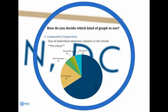Let's look at a few examples from the book. The first is called the component comparison. This is defined as comparing the size of individual elements relative to the whole. In the book, it's suggested that for this type of comparison, you use a pie chart. As you can see in this example, a pie chart highlights the relative contribution of each element to the whole.